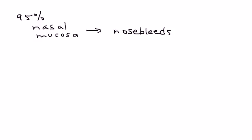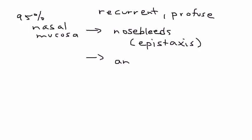This will be very common on a clinical vignette. Nosebleeds are known as epistaxis, and these nosebleeds are recurrent. They happen over and over, and they can be pretty serious, pretty profuse. Because the patient loses a lot of blood, they can cause the patient to become anemic.